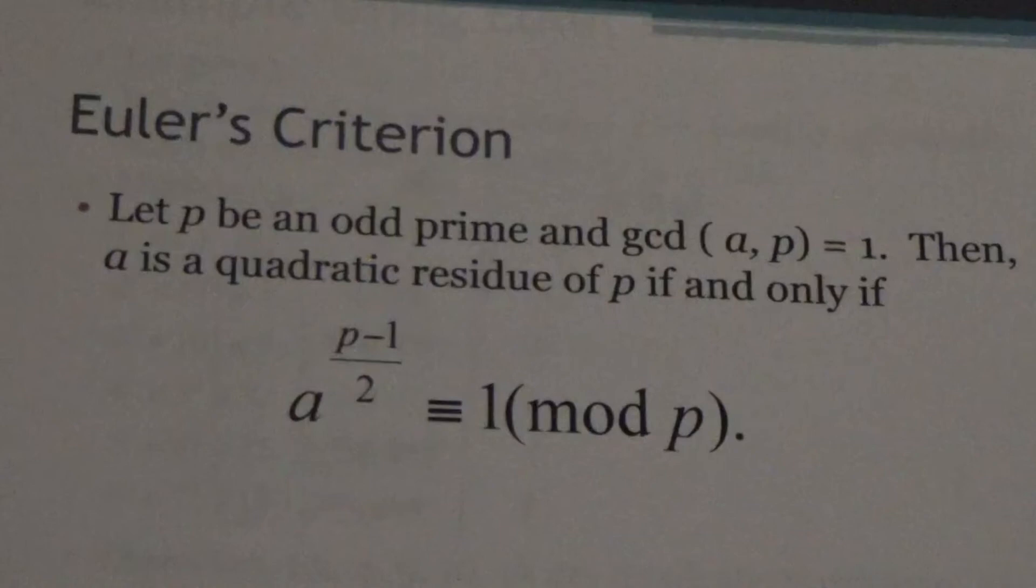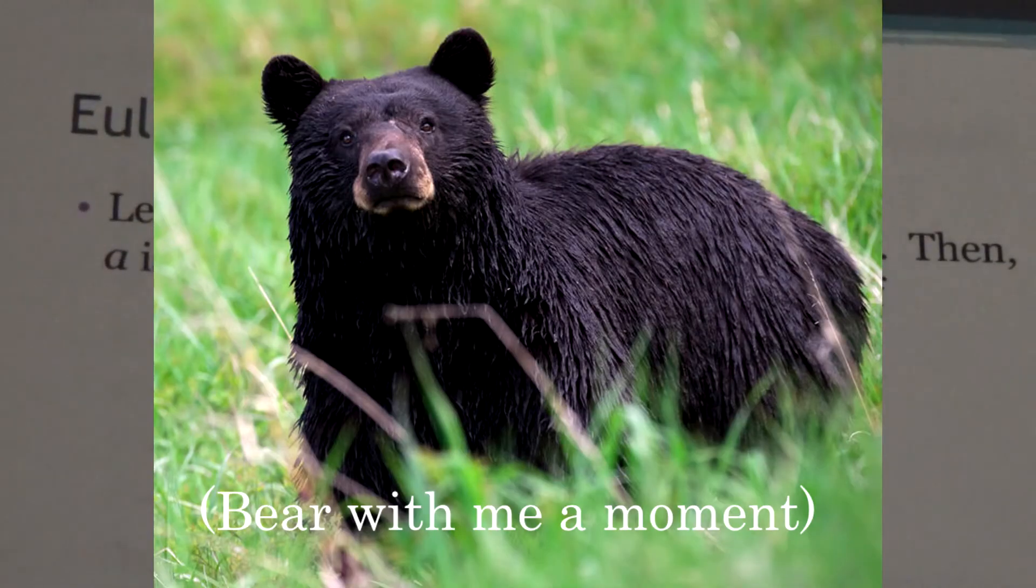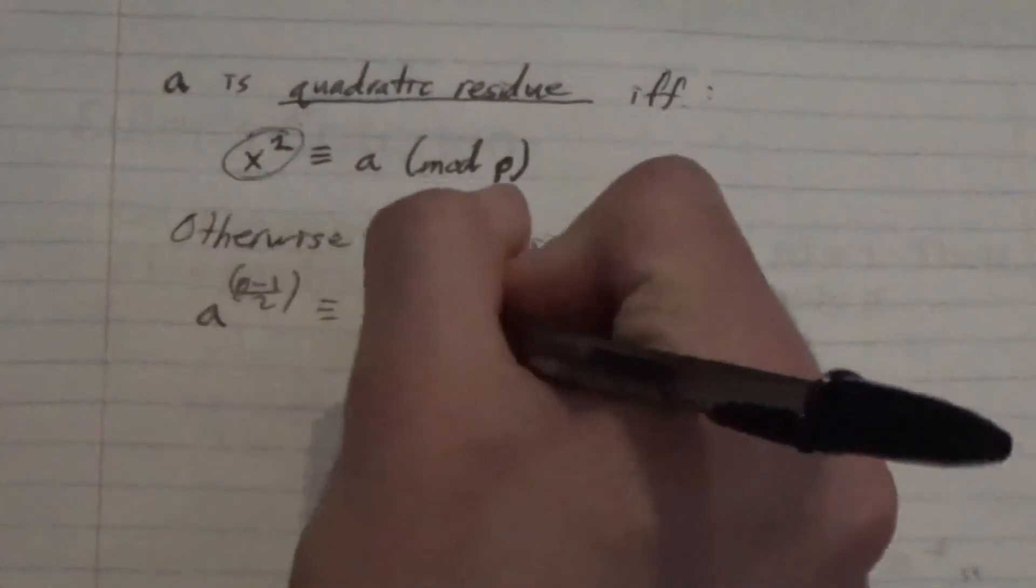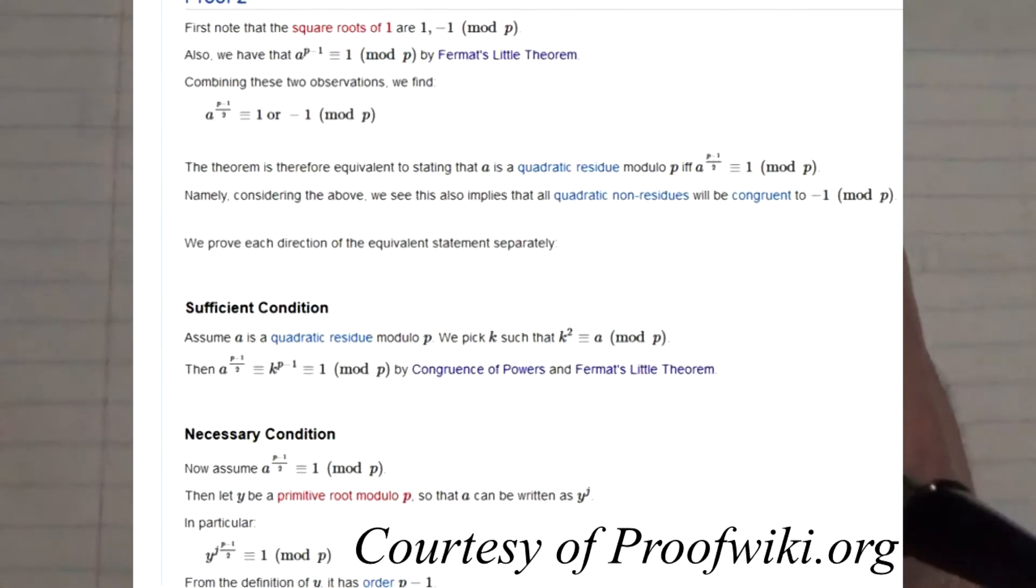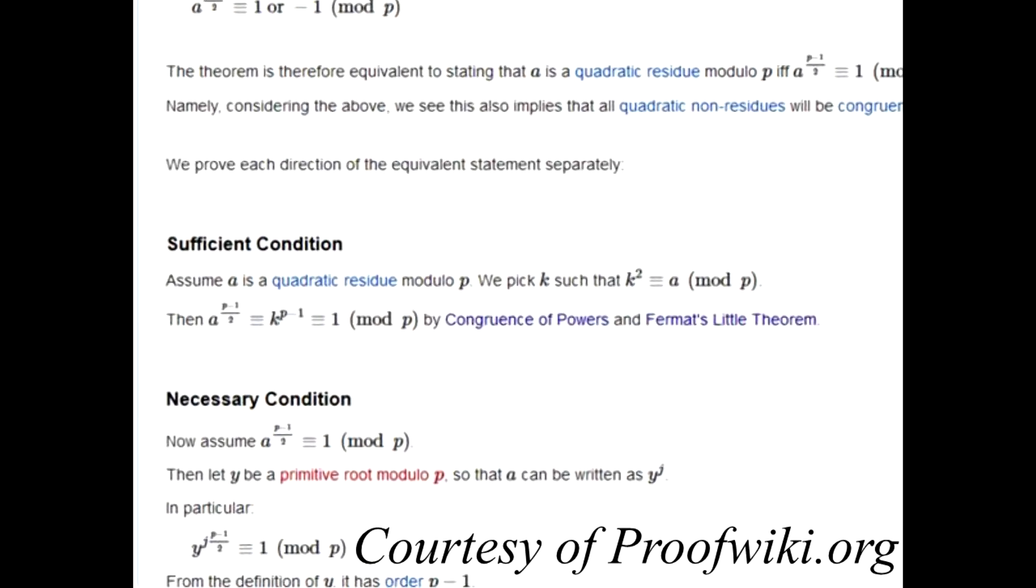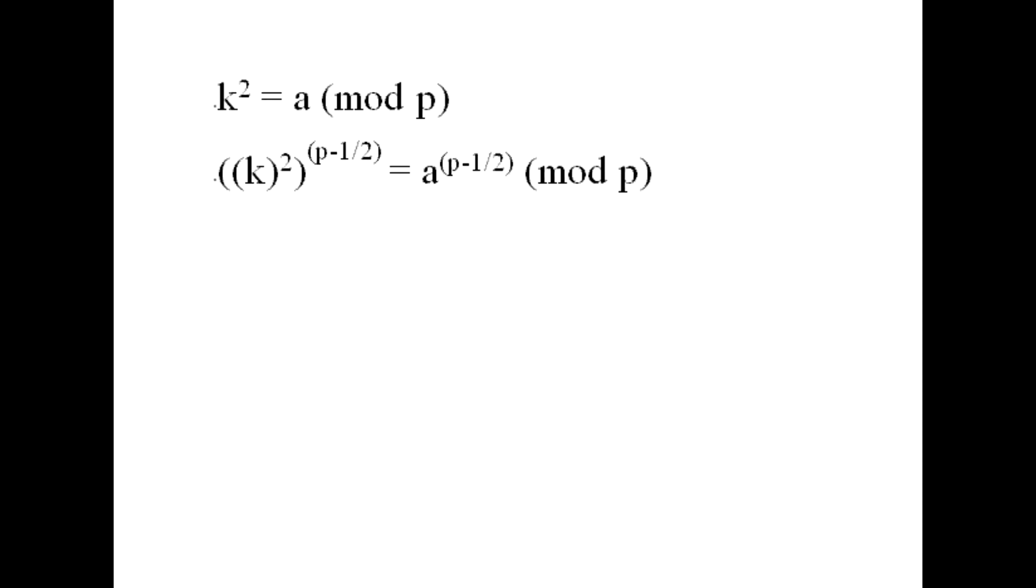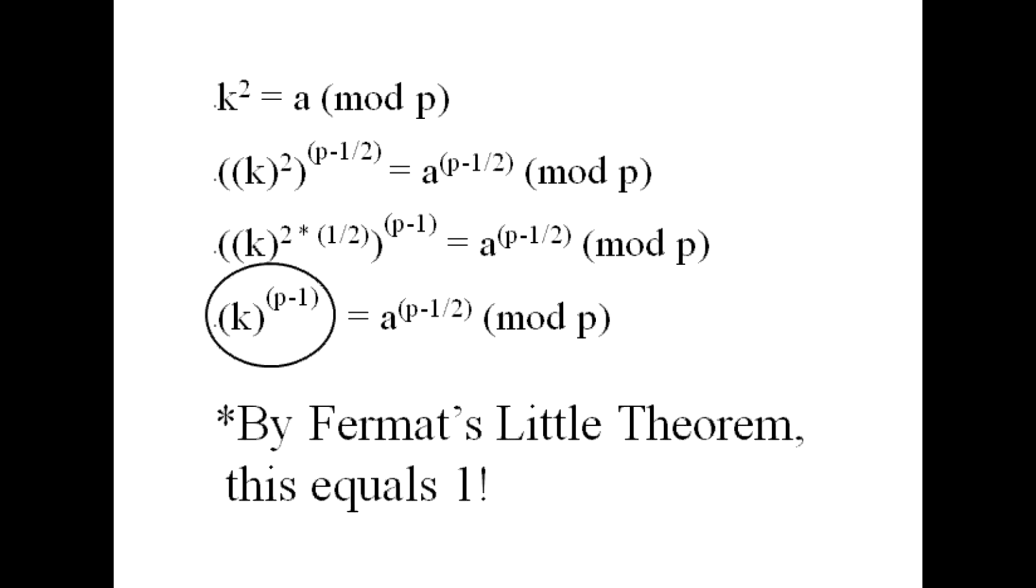But the gist of it is that Euler's criterion is talking about taking a to the (p-1)/2 and specifying that it's congruent to 1 modulo p. So you can tell that from proofwiki.org, we can choose a k such that k² equals a, and then raise both sides of that equation to the quantity (p-1)/2. Now on one side of the equation, the squared and the over 2 cross out. So we end up with a^((p-1)/2) = k^(p-1). And k^(p-1), assuming that k and p are coprime, which they are, is congruent to 1 modulo p. And that's simply by Fermat's Little Theorem.